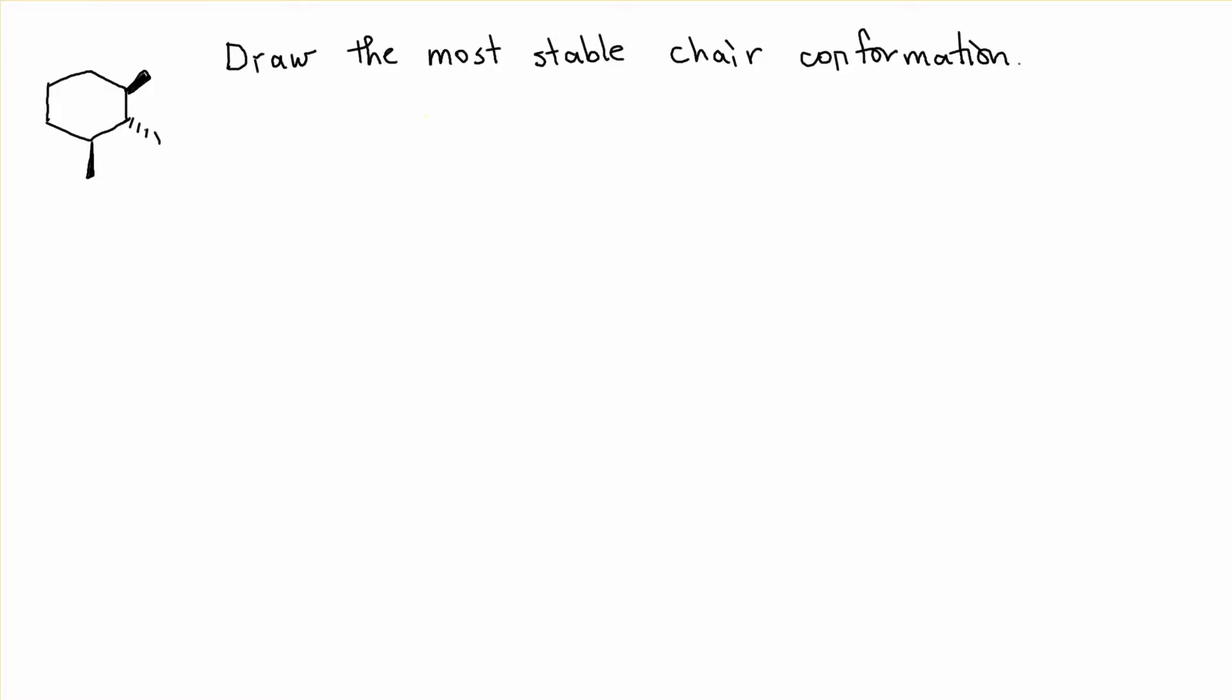This is how I do it. I draw a chair, and I'm most comfortable drawing this particular chair conformation. Then I put the substituents on it and see if it's the most stable. Here's carbon number 1, 2, 3, and then that corresponds to over here carbon number 1, 2, and 3.